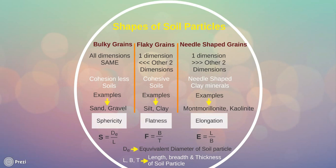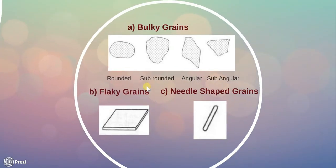Moving forward, these are examples of bulky grains, flecky grains and needle shaped grains. Here we can see bulky grains are rounded, sub rounded, angular and sub angular. Same way, flecky grains, we can see that thickness of flecky grains is much lesser than the other two sides.